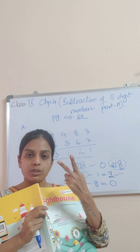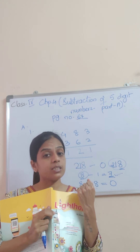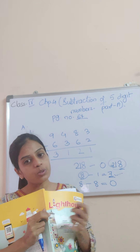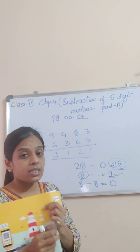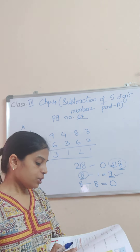Look, if we have 2 and we subtract 2, so what will it be? 0. So these are the main important properties.